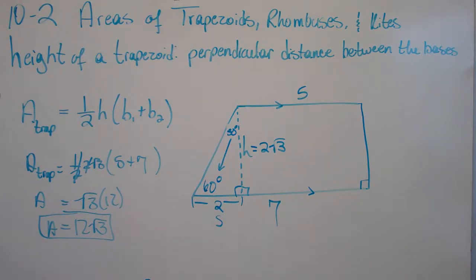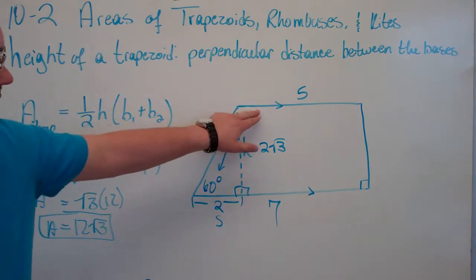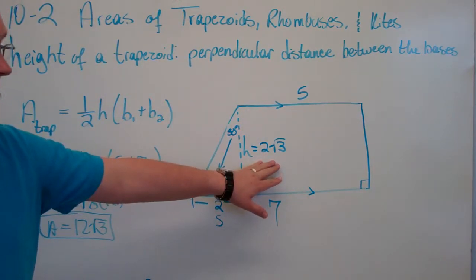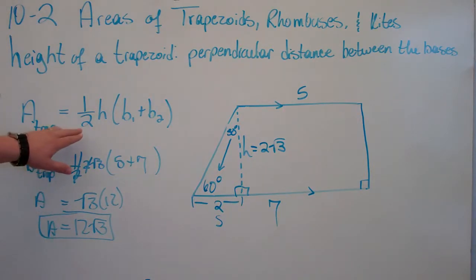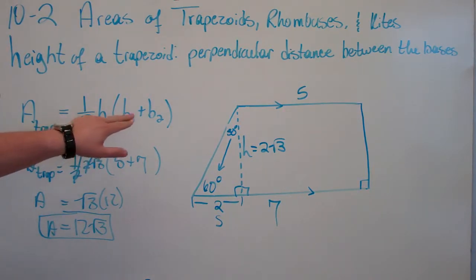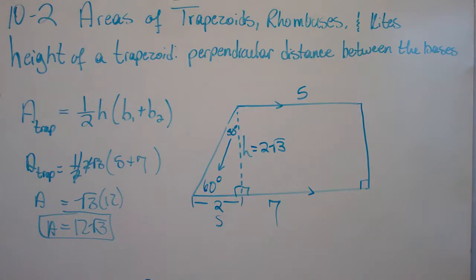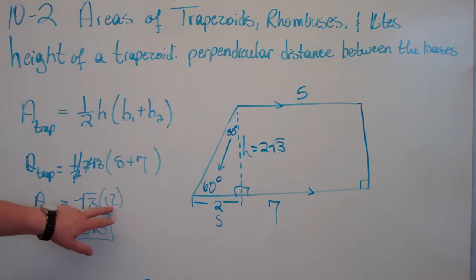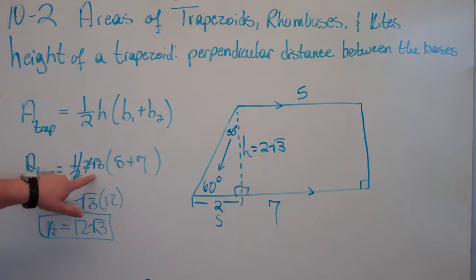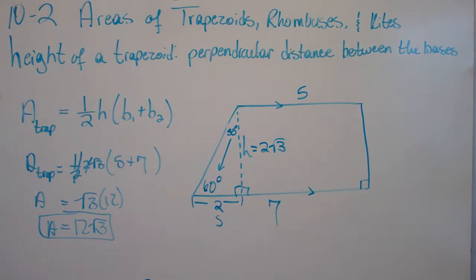That's pretty much it for finding the area of a trapezoid. You need the length of the two bases and the height. Then you do one-half the height times the sum of the two bases. You can either half the height or half the sum of the two bases, but you can only take half one time. For example, I could have halved 12 to get 6 and done 6 times 2 square root of 3, ending up with 12 square root of 3. It doesn't matter what you half, as long as you only half one number.